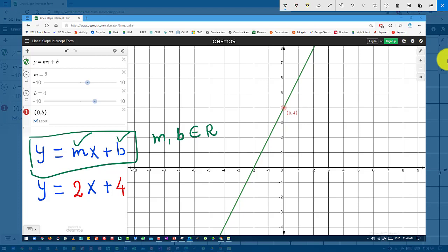To understand it, I have taken m equal to 2 and b equal to 4. What does it mean? It means the slope of the line is 2 and the intercept of the line is 4.